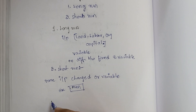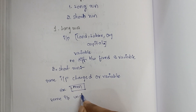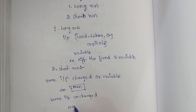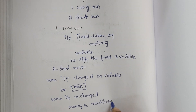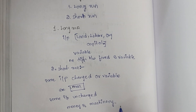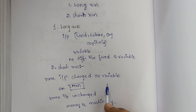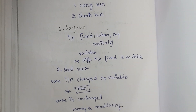Some inputs are unchanged in the short run — those are money and machinery. In the short period of time, money and machineries are considered as unchanged or fixed. So the two types of production function are long run, which describes the long duration, and short run, which describes the short duration. In the next video we will discuss the remaining topics.